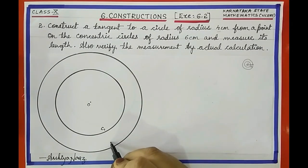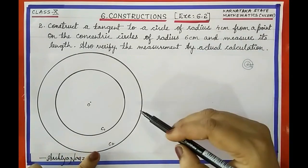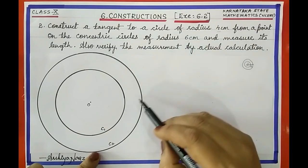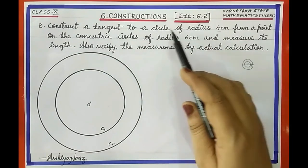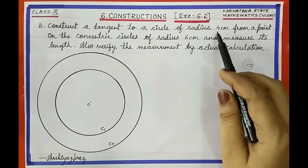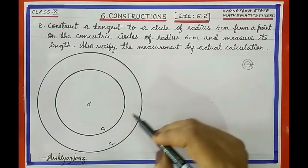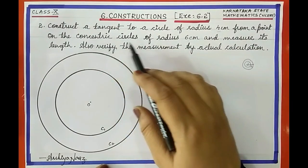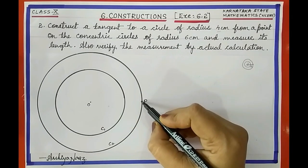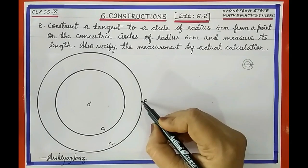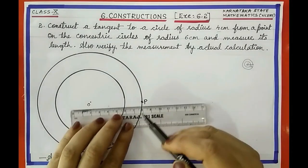Call this circle C2. We now have circle C1 with radius 4 centimeter and circle C2 with radius 6 centimeter — these are concentric circles. We need to construct a tangent to circle C1 (radius 4 cm). From a point on the concentric circle C2 (radius 6 cm), let us mark a point on circle C2 and name this point as P.